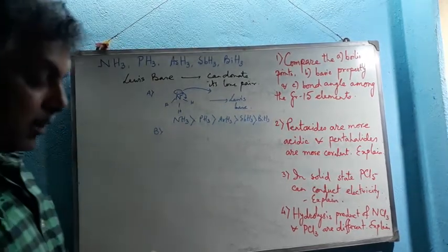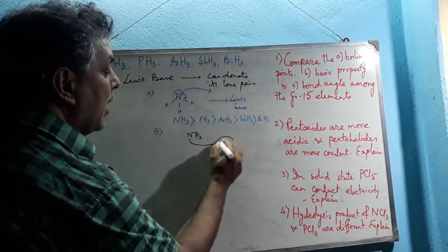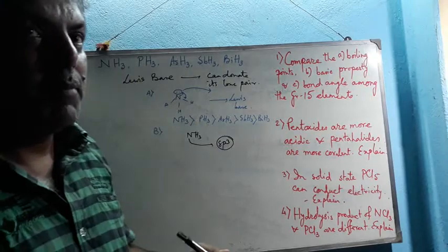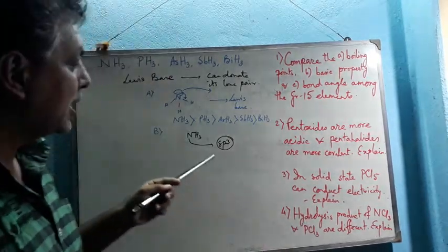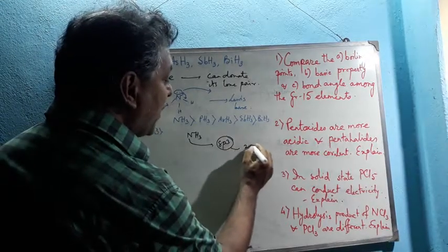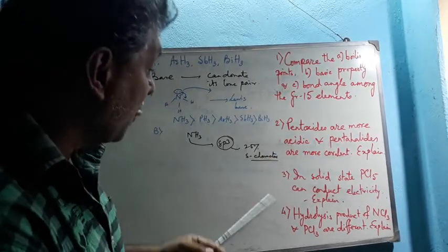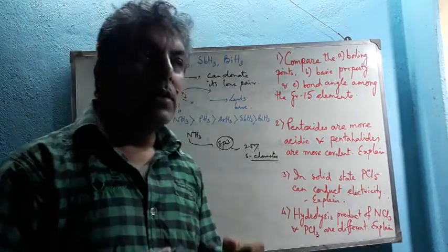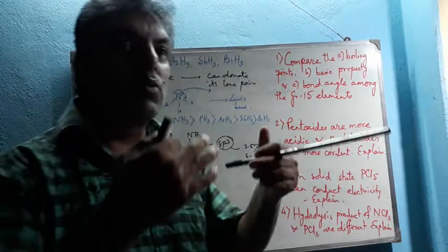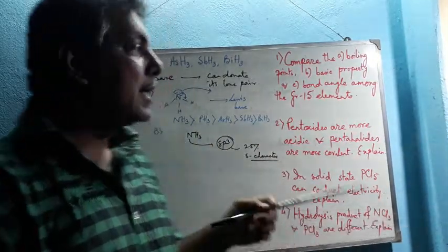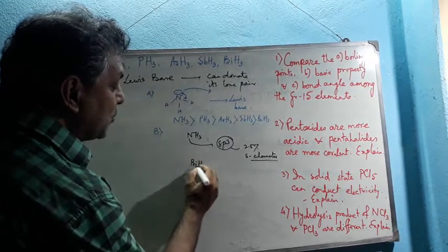Explanation two: in ammonia, nitrogen is sp3 hybridized due to the small size of nitrogen and hydrogen allowing proper overlap. In sp3 hybridization, 25% s-character is present. Since s-character is not very high at 25%, and s orbitals are nearer to the nucleus, the donating ability of the lone pair is relatively high. With only 25% s-character, ammonia has more tendency to donate its lone pair.